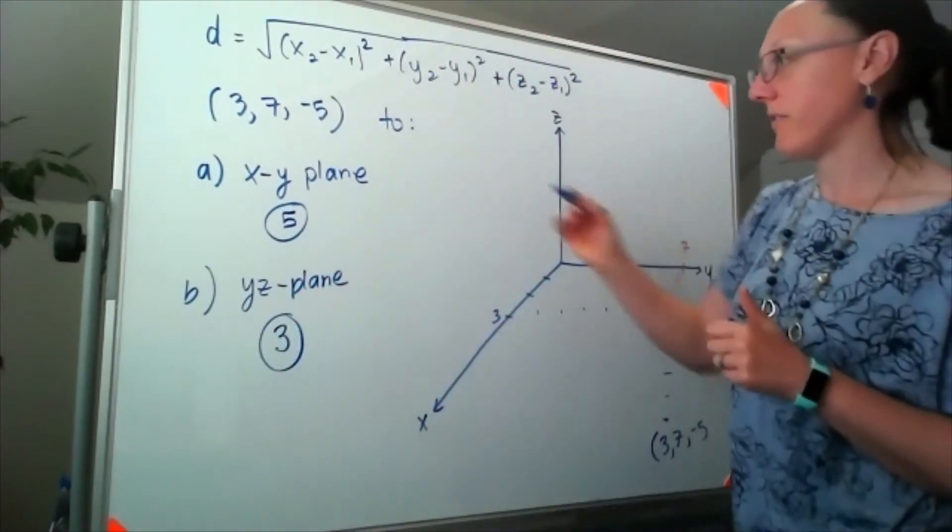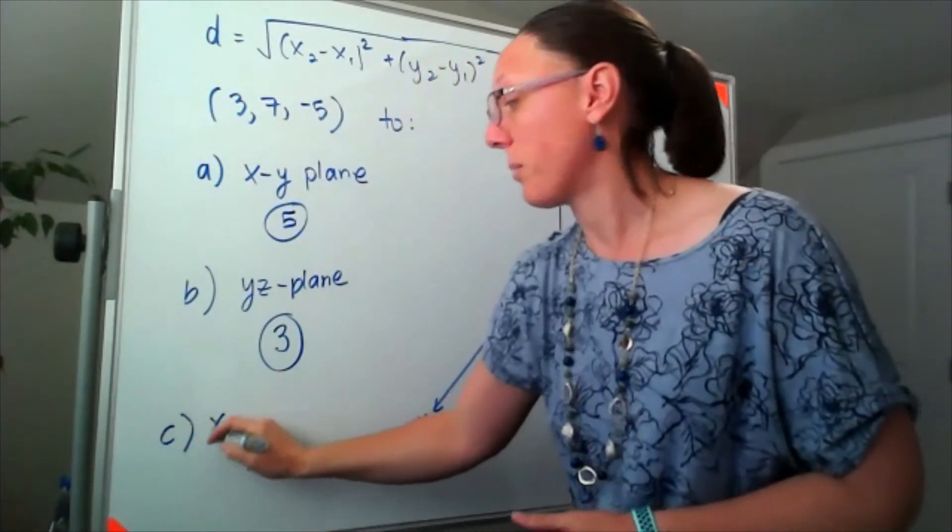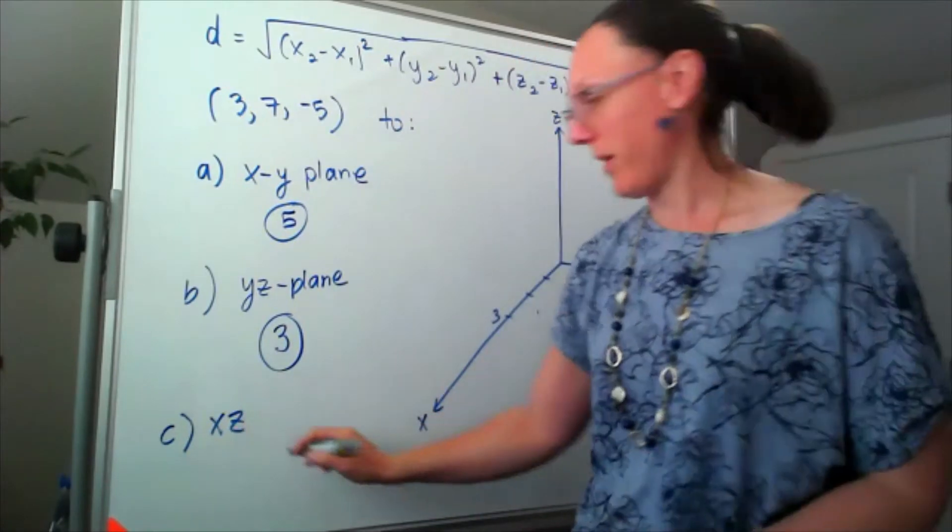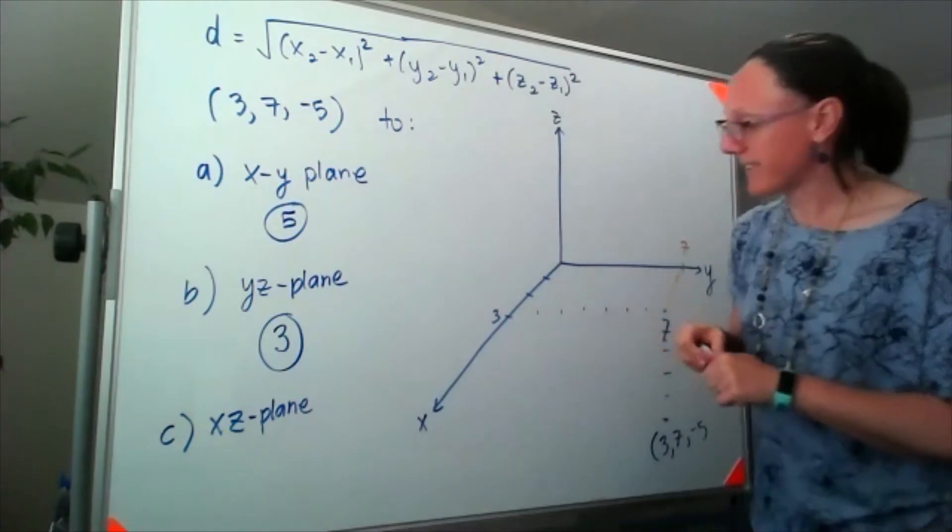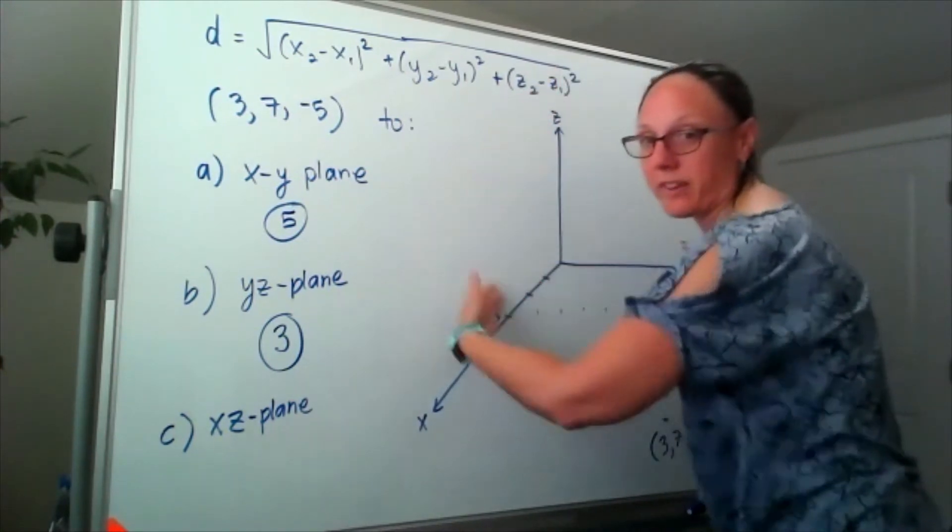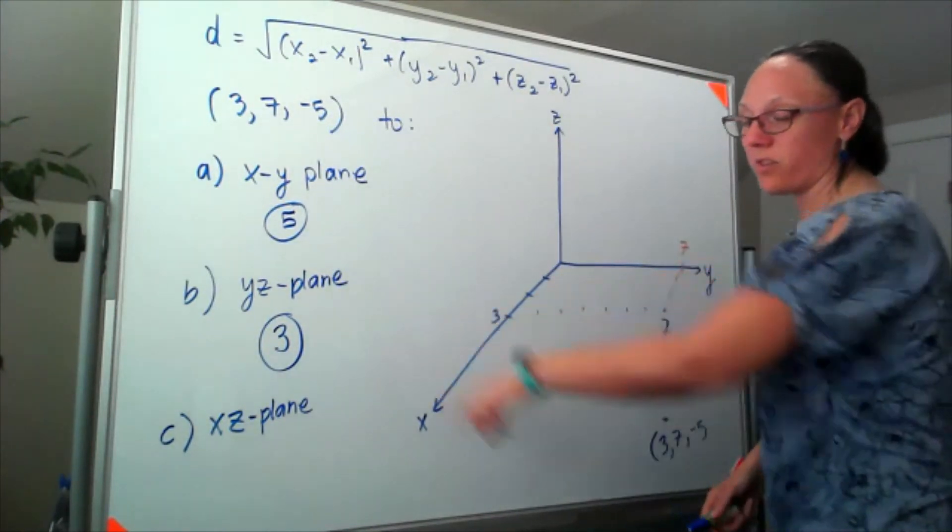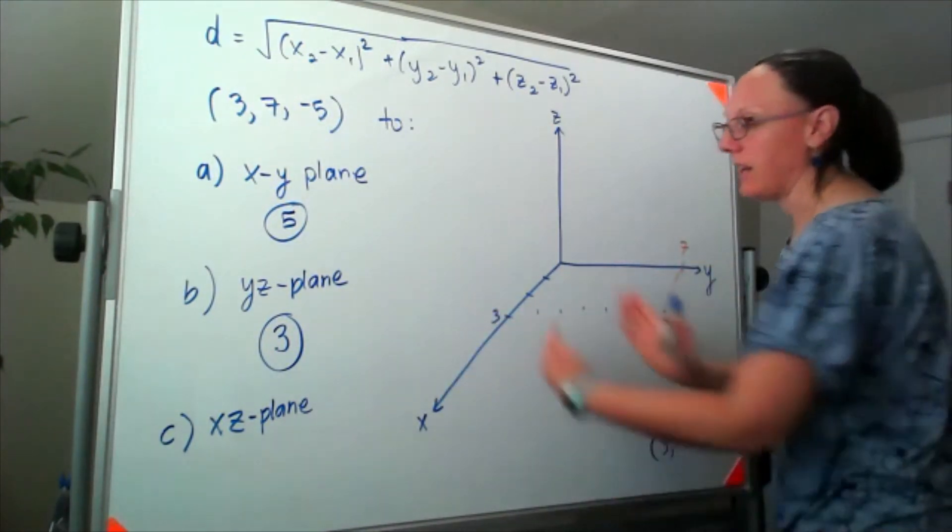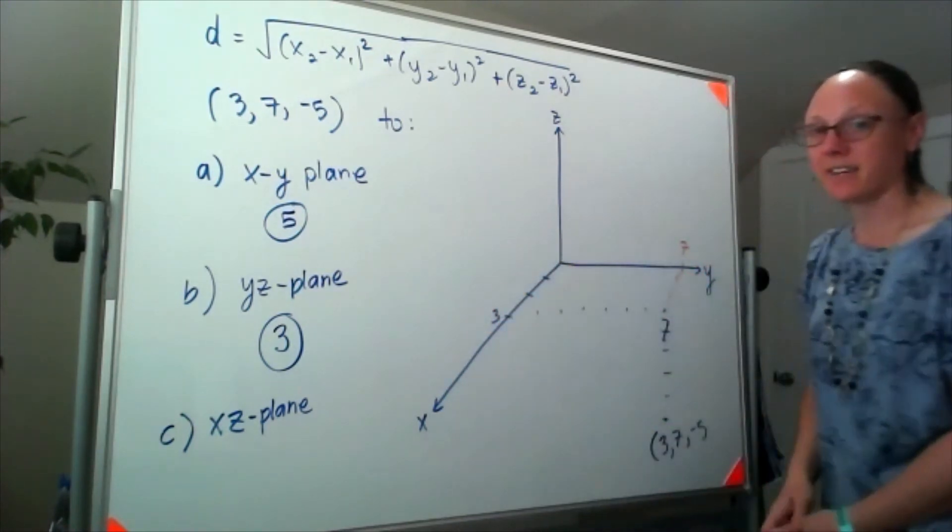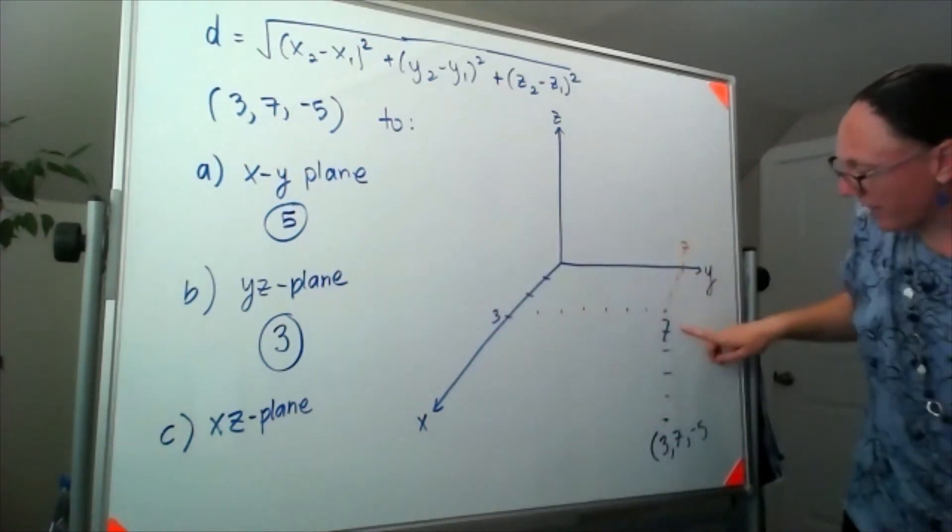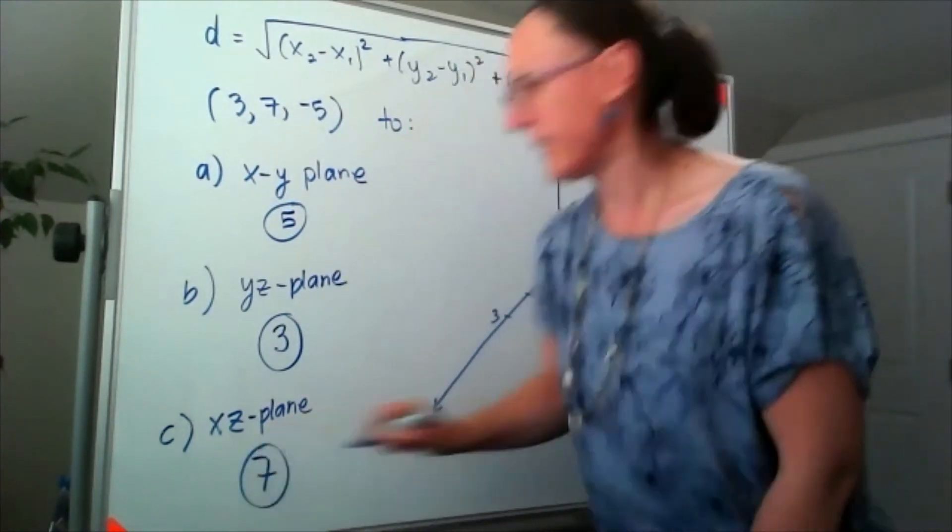Then we've got c is the distance to, you could probably guess this, the xz plane. And the xz plane, that's the one that lives over here with the x and z axes. So the distance to the xz plane is how far we walked here along the y axis. Well, we walked out this way 7 steps, so that distance is 7.